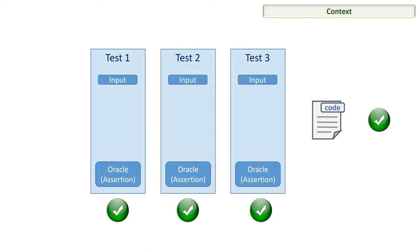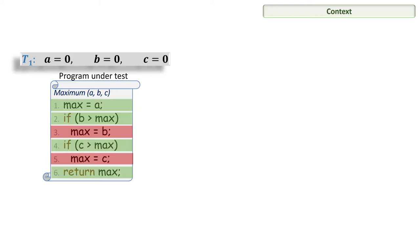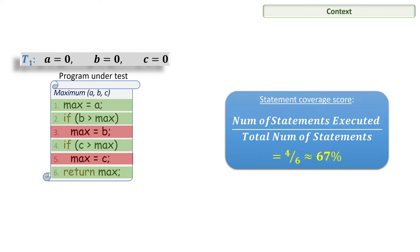Now, how do we design effective tests? In the literature, there are what are called test adequacy criteria that help to evaluate tests and to create additional tests. An example is statement coverage, where we execute a test on the program, see which statements are executed and which are not, compute the statement coverage, and if it's not enough, design new tests to cover the previously uncovered statements.